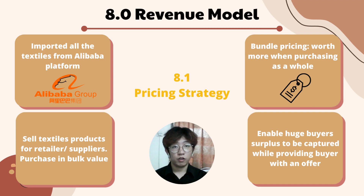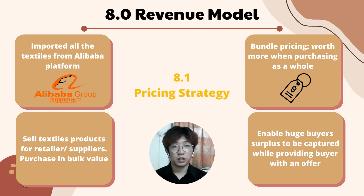My name is Kenny Tan with metric number 279181 and I'm going to present the revenue model of StitchLab. To start with, I will present the pricing strategy of our company. Alibaba is a marketplace for merchants where we can purchase things in bulk at discount rates. StitchLab purchases all of its fabrics from there, and due to the fact that suppliers and retailers buy textiles in large quantities, our business has opted to offer textile products to them.